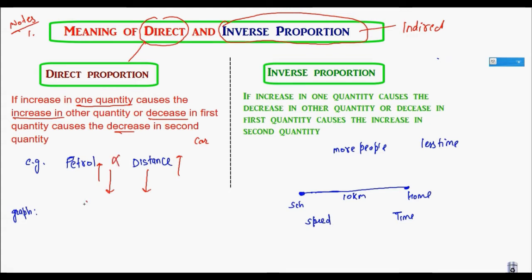Another example: we are purchasing potatoes and the rate is fixed. If I increase the quantity — say instead of two kg, I purchase 10 kg — I have to pay more. If I decrease the quantity, for example only two kg, I have to pay less. On increasing one quantity, the second also increases; on decreasing the first, the second also decreases. This is an example of direct proportion.